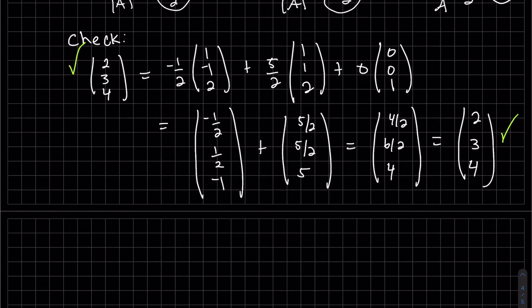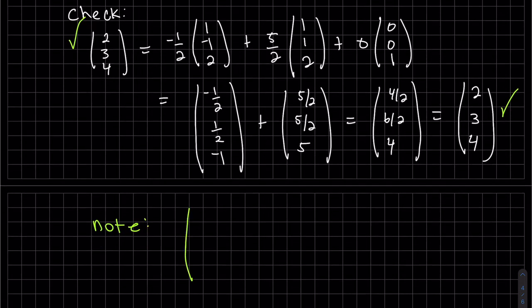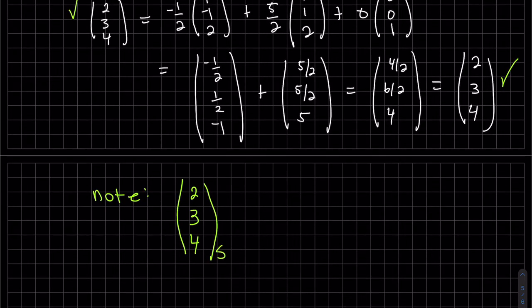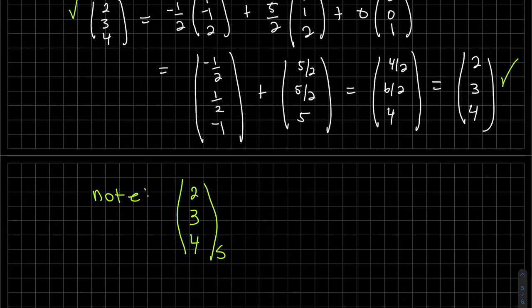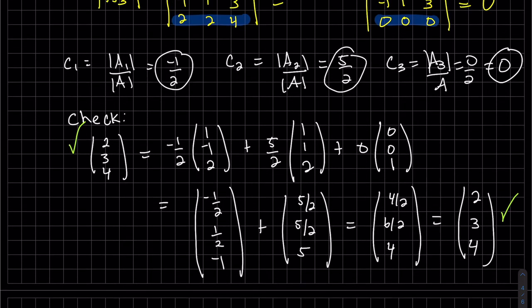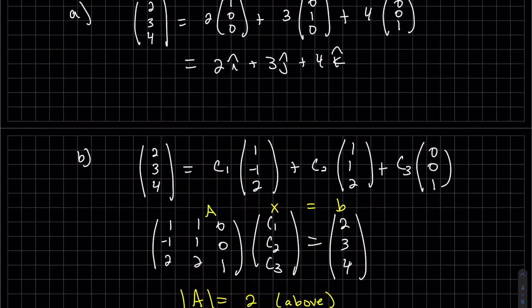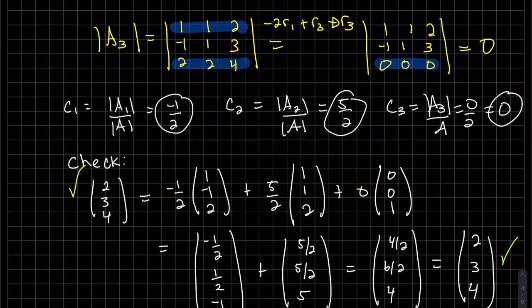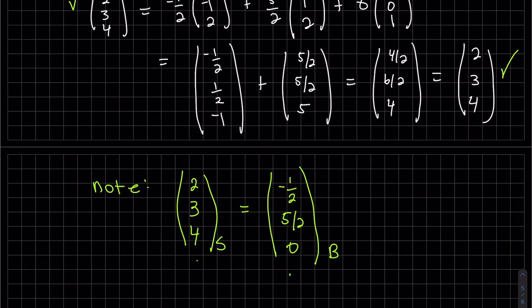And just a note here. Our notation that we're going to start adopting. So 2, 3, 4 is our standard basis. It's our vector and our standard basis. And that's equal to, these are our constants, writing 2, 3, 4 as a linear combination. And that's our, we remember we called that basis B. And these are our constants that we wrote these as a linear combination of.